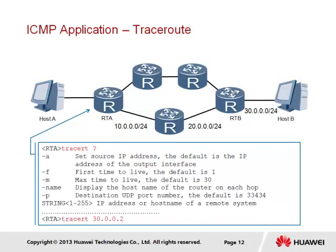Traceroute is another common application that employs ICMP echo messages to trace the path taken by data from the source to the destination, specified by the destination IP address in the IP header. The TTL value is used to limit the range of the ICMP message to one single hop initially, which is incrementally increased. Once the TTL reaches zero, an ICMP message is returned to the source to determine the path and gauge the duration of transmission.